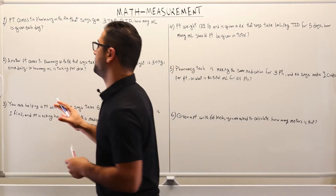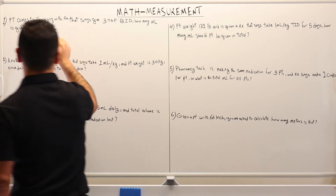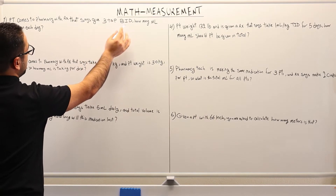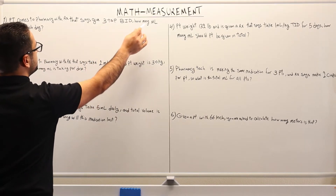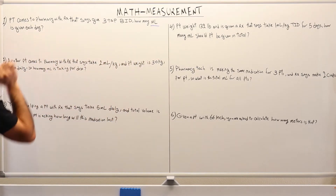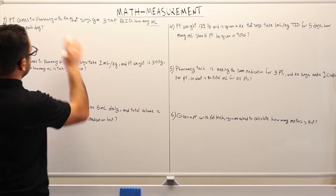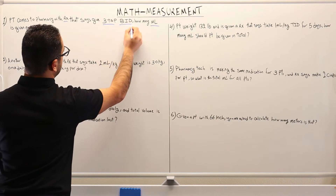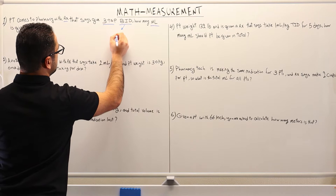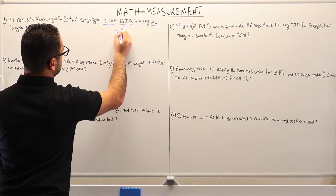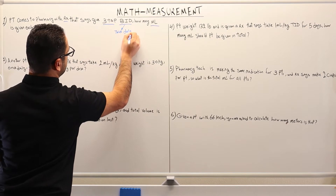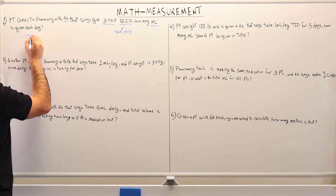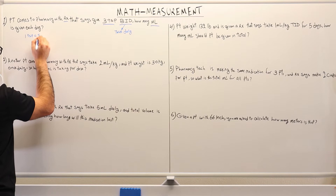On the first example, we have a patient who comes to the pharmacy with a prescription that says give three teaspoons BID, and the question is asking how many milliliters is given each day. BID means twice daily. And we have three teaspoons, and we know that one teaspoon is equal to five milliliters.